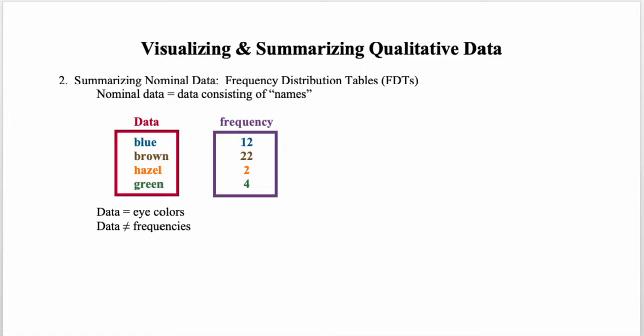The frequencies are simply the occurrences of how frequently each value was observed in the data set. If we sum the frequencies, we can determine the sample size. The notation introduced here is the Greek letter capital sigma, which stands for the sum, and lowercase f stands for the sum of all frequencies in the frequency distribution table.